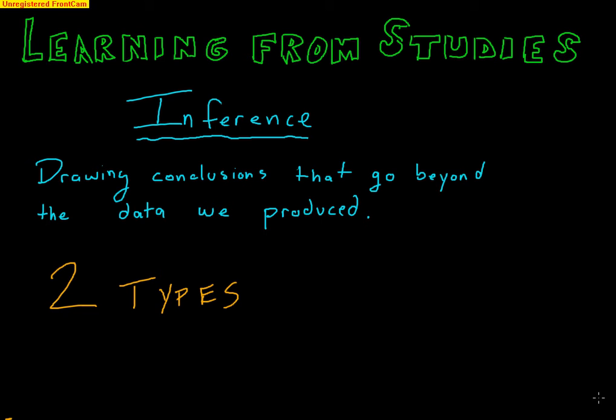Welcome to AP Stats: learning from studies. This is a very quick video that covers what we can actually learn from a study and how we can learn from it. The important thing to introduce here is called inference. Statistical inference is drawing conclusions that go beyond the data we produce — trying to learn something and apply what we learn from our data to beyond just our data.